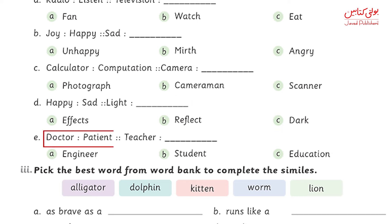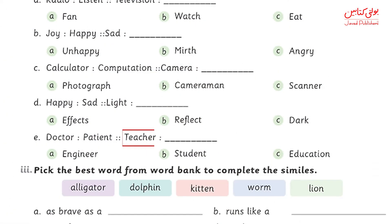E is: doctor is to patient. Here again, you see what does a doctor do — what is his task. The doctor's task is to check the patient. So the teacher's task would be — now it becomes easy for you. From the options, pick the teacher's task. The teacher's task is to teach the student, so the answer here is student.